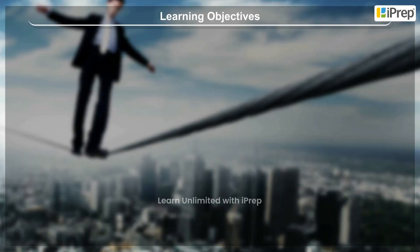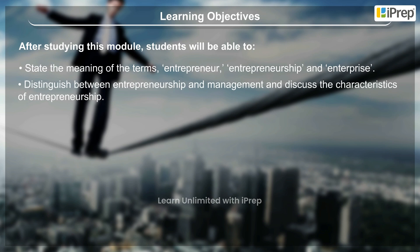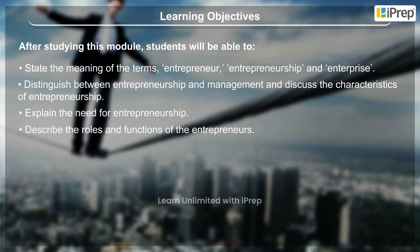Learning objectives: After studying this module, students will be able to state the meaning of the terms entrepreneur, entrepreneurship, and enterprise; distinguish between entrepreneurship and management; discuss the characteristics of entrepreneurship; explain the need for entrepreneurship; and describe the roles and functions of entrepreneurs.